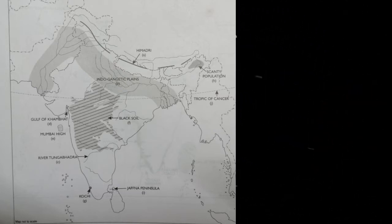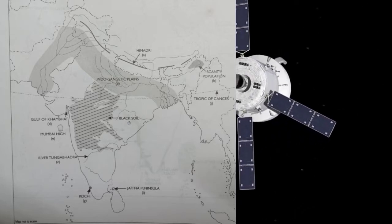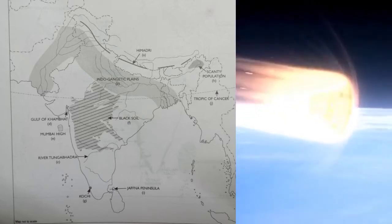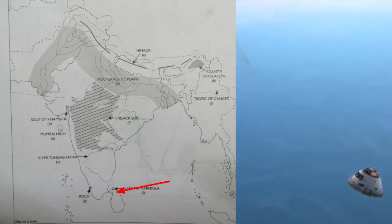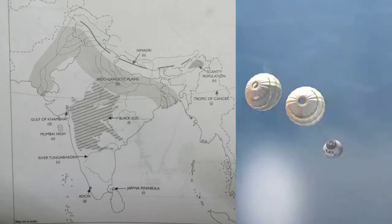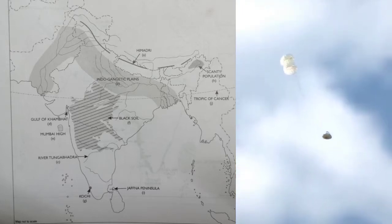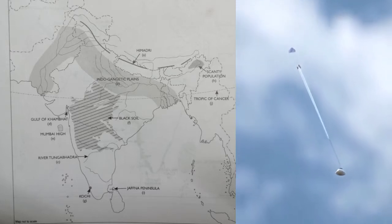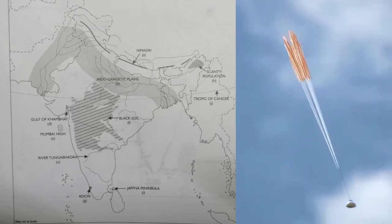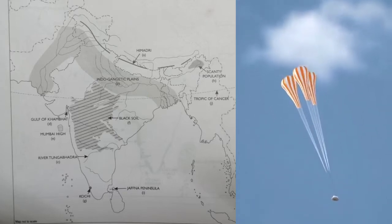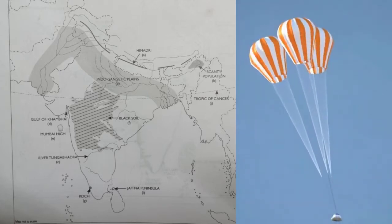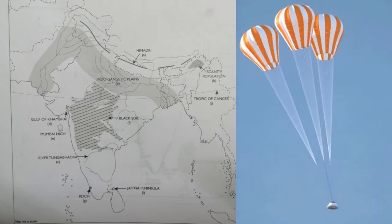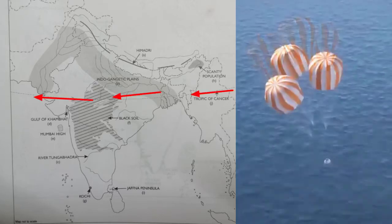Definitely mention Northeast Arunachal Pradesh. Next, there is the Kathiawar Peninsula — mark it here carefully. Draw the Kathiawar Peninsula. Next, name the latitude which divides India into half — very important, asked many times in ICSE geography Class 10.